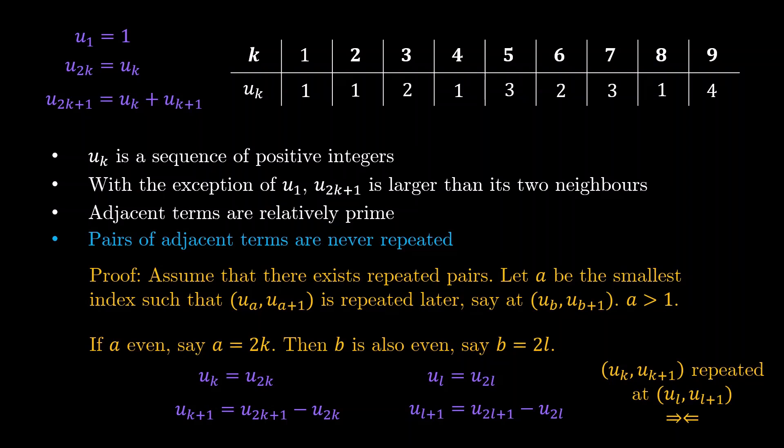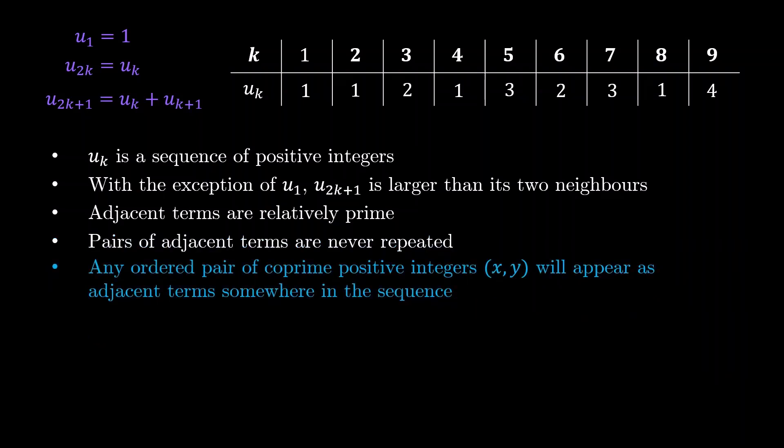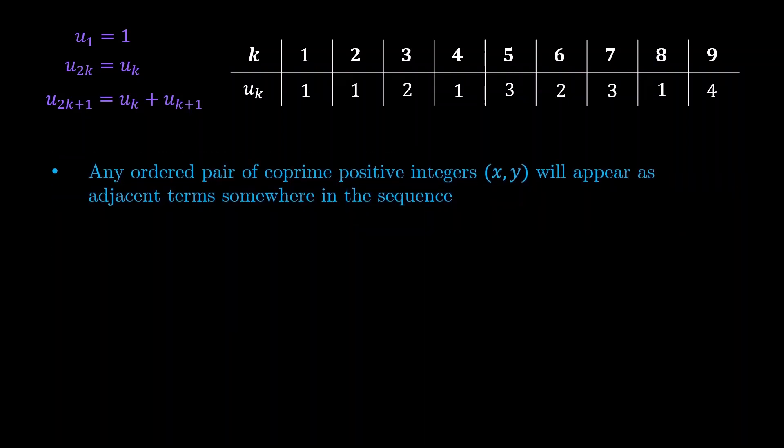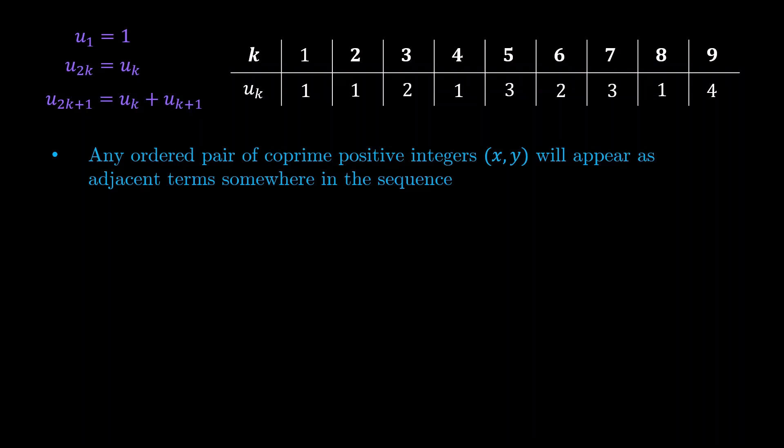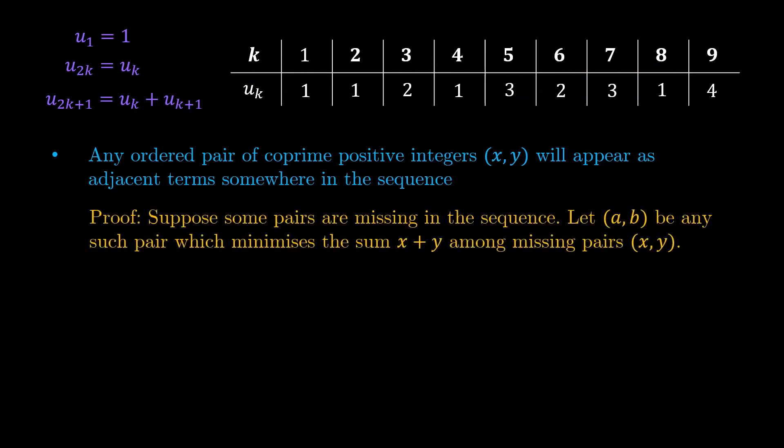And lastly, this is the fifth statement, we'll prove the surjectivity part. So we'll prove that any ordered pair of coprime positive integers will appear as adjacent terms somewhere in the sequence. So every fraction will ultimately come from some pair of consecutive terms in the sequence. To prove this, we'll use once again contradiction. So suppose some pairs are missing in the sequence. Now look at all these missing pairs, and we choose some pair that minimizes the sum.